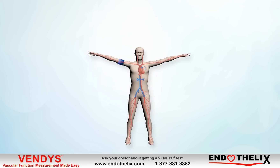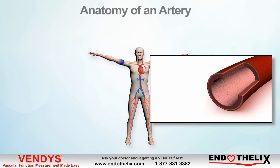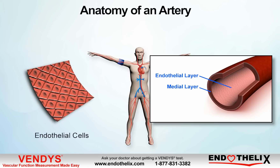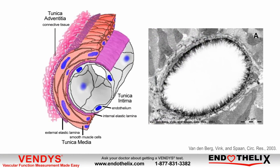Endothelial cells are the inner lining of blood vessels. Each artery has three layers: the endothelial layer, medial layer, and adventitial layer. The endothelial layer is the innermost layer — the so-called brain of the arteries — and is considered the most important layer.